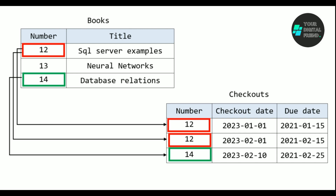The checkouts table might contain columns for the checkout date, due date, and book number. The book number in the checkouts table would be a foreign key that references the number in the books table, establishing the one-to-many relationship. One book in the books table can correspond to many checkouts in the checkouts table, since one book can be checked out multiple times by different patrons. For example, the book with number 12 was checked out twice, on January 1 and February 1.